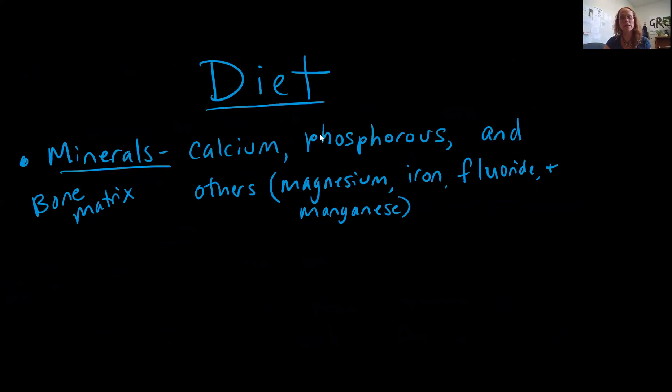The final bit that's involved in our bone growth and development would of course be our diet. We've talked about calcium salts being an important component for the hardness of our bone. That calcium is of course coming from our diet. So calcium and phosphorus and other minerals such as magnesium, iron, fluoride, and manganese are all going to be required from our diet in order to have a healthy bony matrix.